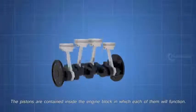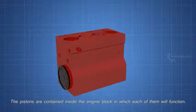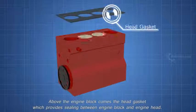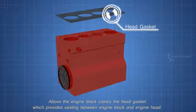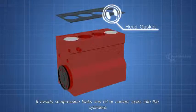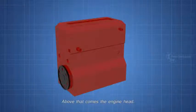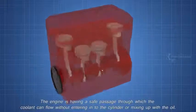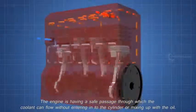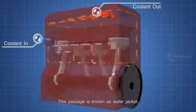The pistons are contained inside the engine block, in which each of them will function. Above the engine block comes the head gasket which provides sealing between engine block and engine head. It avoids compression leaks and oil or coolant leaks into the cylinders. Above that comes the engine head. The engine is having a safe passage through which the coolant can flow without entering into the cylinder or mixing up with the oil. This passage is known as water jacket.